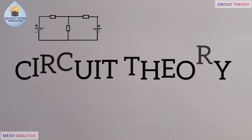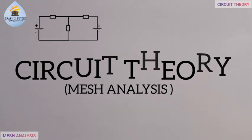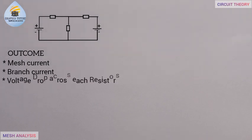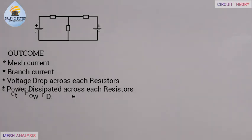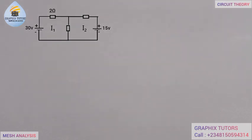In this video we want to use mesh analysis to solve for i1, i2, and i3, and also calculate the voltage drop across each resistor, the power dissipated in each resistor, and the total power. Looking at the circuit closely, it has two meshes called i1 and i2, two voltage sources of 30 volts and 15 volts, and three resistors with resistances of 2 ohms, 3 ohms, and 4 ohms.